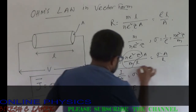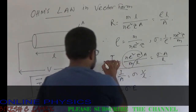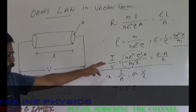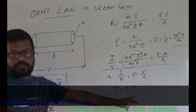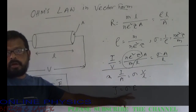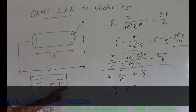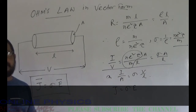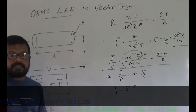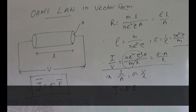Since J is a vector quantity and E is also a vector quantity, we can write J equals sigma·E. This is called Ohm's law in vector form, where J is the current density, E is the electric field, and sigma is the conductivity of the conductor.